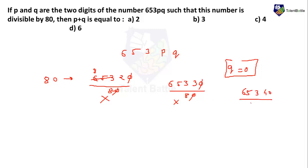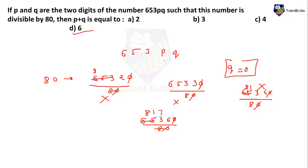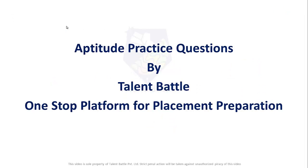Checking 65340 divided by 80: removing the trailing zero, 6534 divided by 8 — 54 is not divisible by 8, so this is incorrect. Checking 65360 divided by 80: removing the zero, 6536 divided by 8 — 56 is divisible by 8 (56 ÷ 8 = 7). So P = 6 and Q = 0, meaning P + Q = 6 + 0 = 6. The answer is 6.